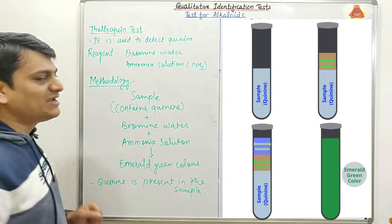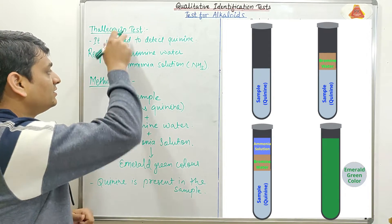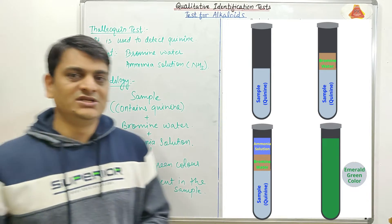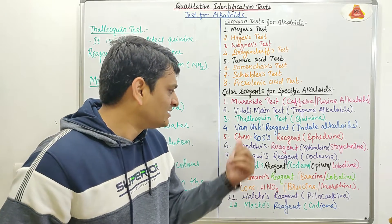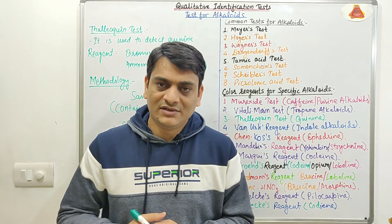These are the chemicals used as reagents in the Thaliokine test, and this is the methodology. In my next video, I will discuss the details about the Van Urk reagent. Thank you.